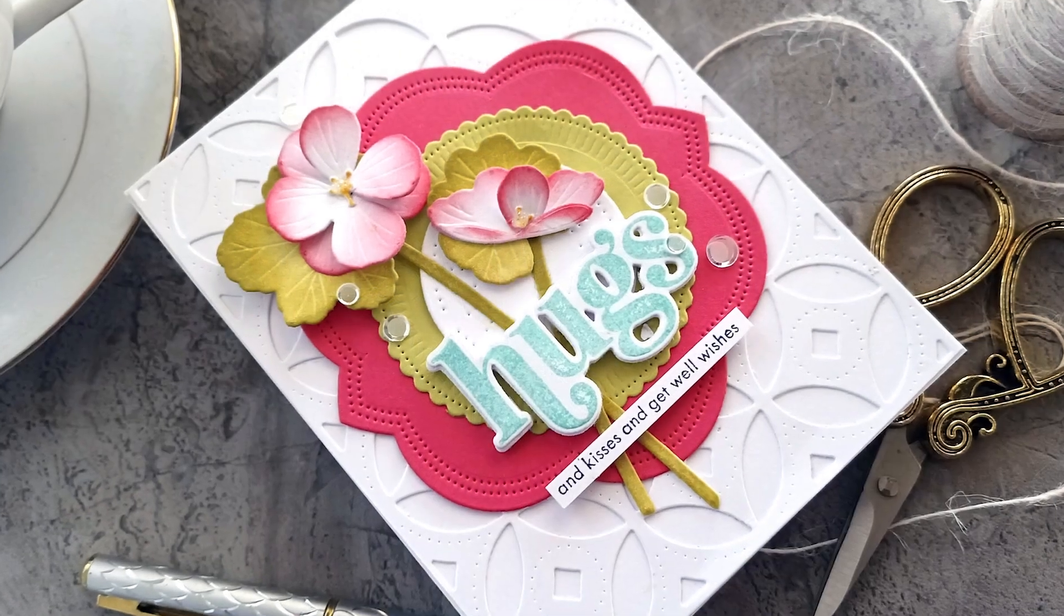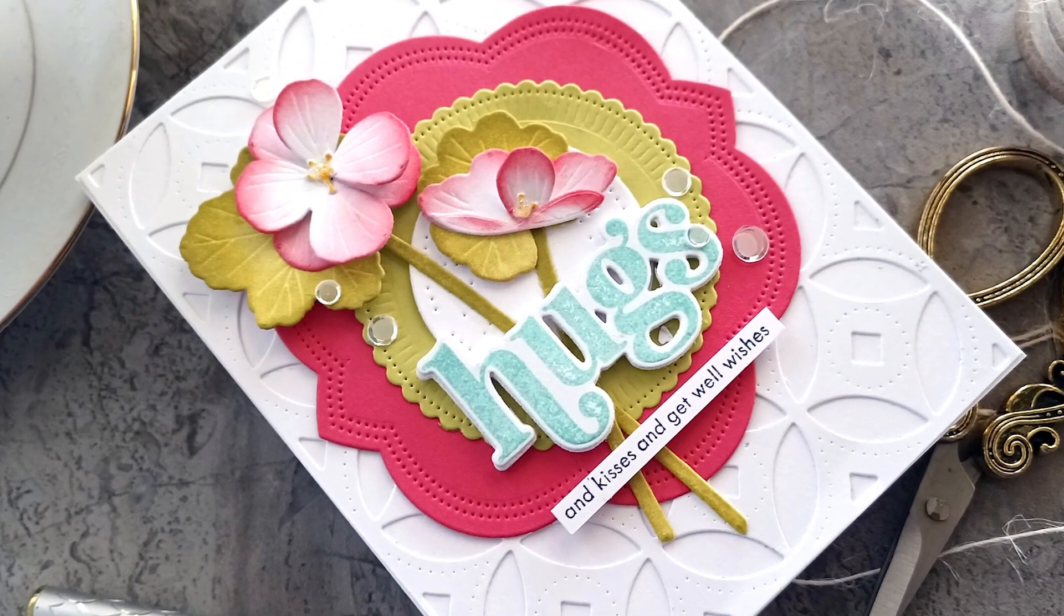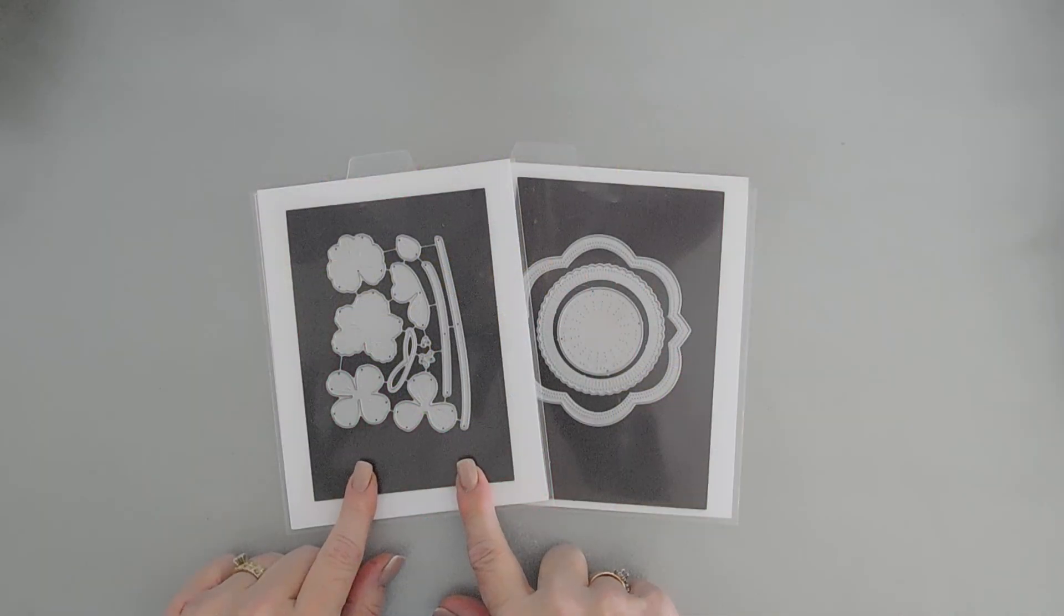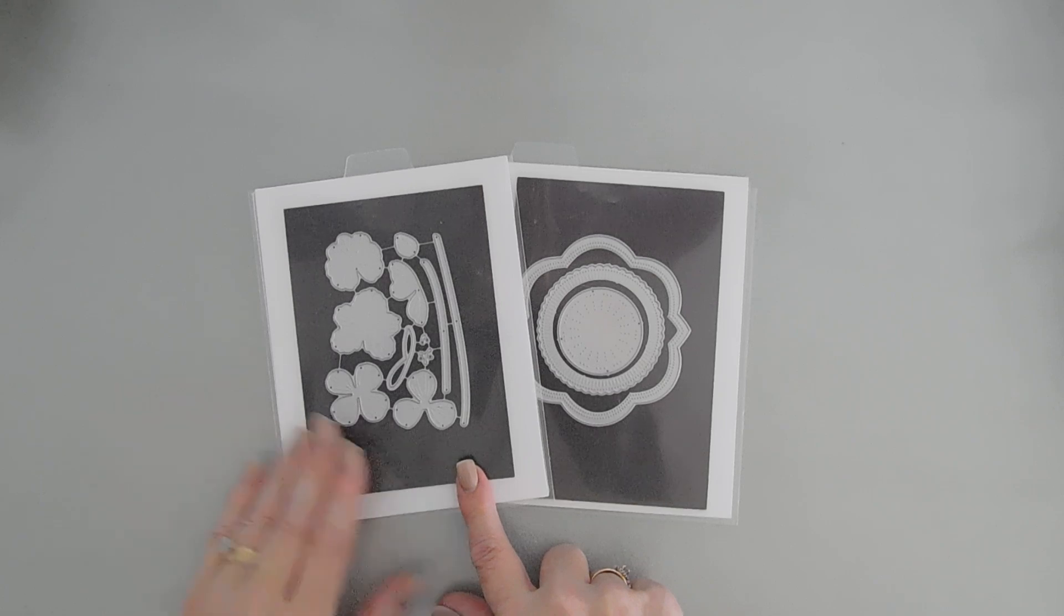We are going to be using a few items that are new over at the Paper Tray Ink Shop. This is the Into the Blooms geranium die set. It creates the prettiest geraniums and it's a layering set, so it just adds that extra detail.